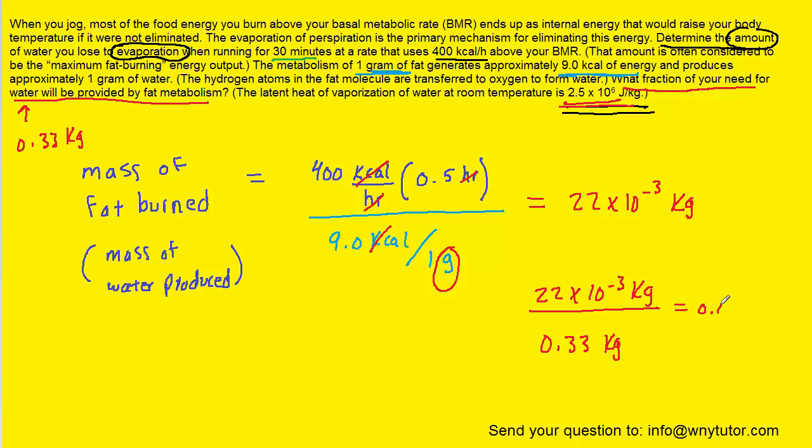And when you work that out, that comes to roughly 0.067. And if you want that as a percent, you can just multiply it by 100 and you get 6.7%. So what this means is that burning fat provides 6.7% of the total water need of your body.